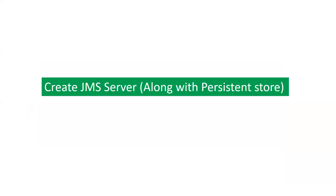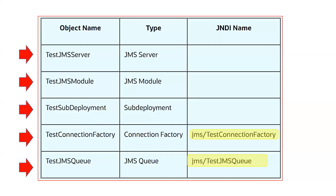The sequence is very important. First we will create a JMS server, which we target to our managed server. Then we create our JMS module, also targeted to the managed server. Inside the JMS module, we create a sub-deployment. Once sub-deployment is created, we create a connection factory and then a JMS queue. This is the main sequence for configuring JMS resources.